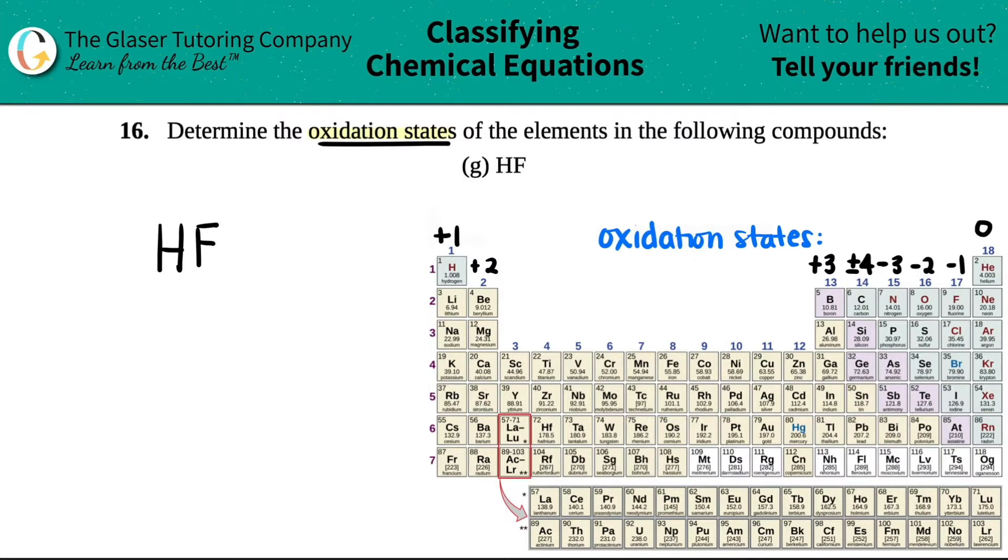What oxidation states are: they're just the charges. We've been seeing these so many times before. The charges are the ones that were in the upper right hand corner when you made your compound. We've been making compounds since we were in chapter two.